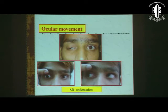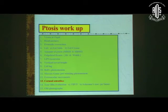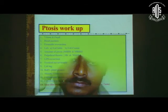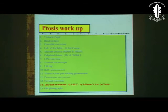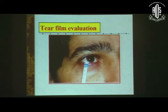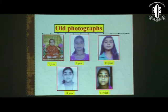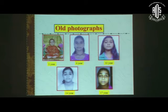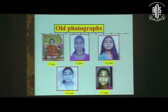Extraocular movement should be assessed to rule out superior rectus underaction. Corneal sensation has to be tested. Tear film evaluation with the Schirmer's test is also done. Most importantly, you should look for old photographs if you are suspecting acquired ptosis — like this patient who had no ptosis, gradually developed ptosis, and it increased to this level; this was an acquired case.